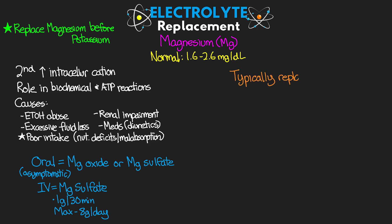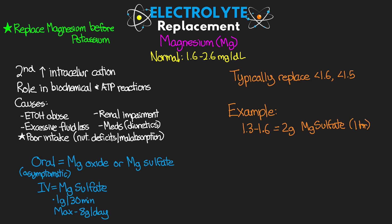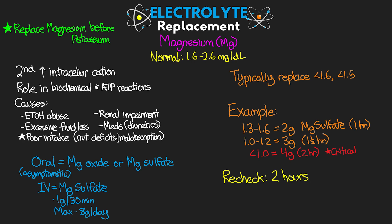We typically don't start replacing unless they're under 1.6 or 1.5, depending on your facility's protocols. An example of a magnesium replacement protocol: if the patient's magnesium is 1.3 to 1.6, give 2 grams of magnesium sulfate IV over about an hour. If the level is 1.1 to 1.2, give 3 grams over about an hour and a half. If the mag level is less than 1, give 4 grams over about 2 hours — this is critical, and the provider needs to be notified. We are definitely not replacing critical levels with oral or enteral supplementation. Recheck serum magnesium level 2 hours after the last dose is finished infusing.